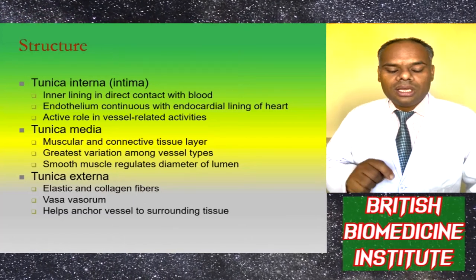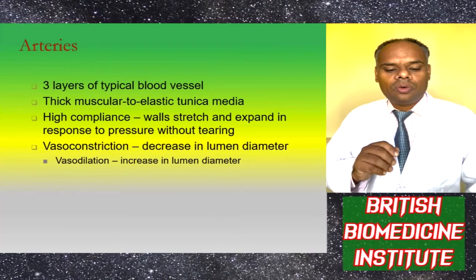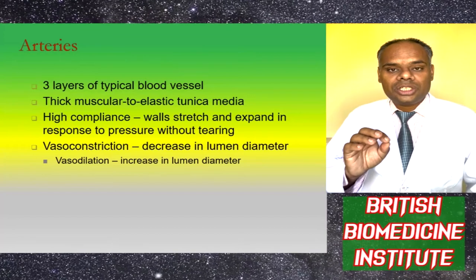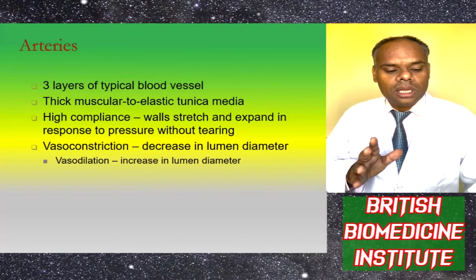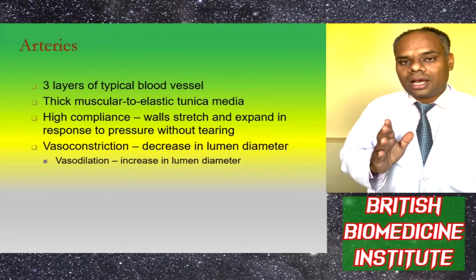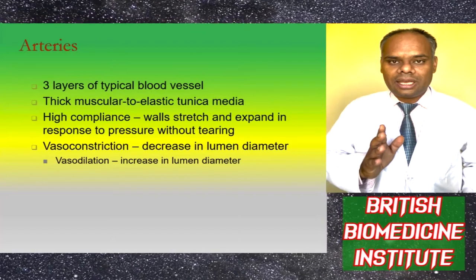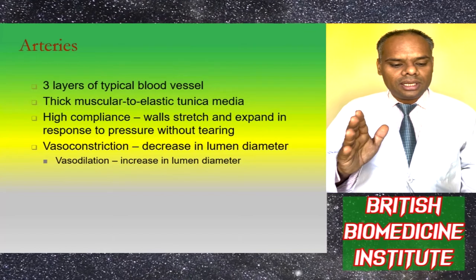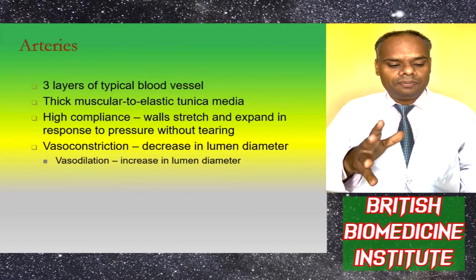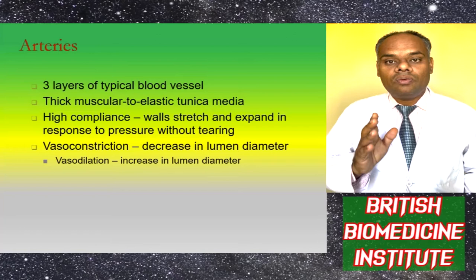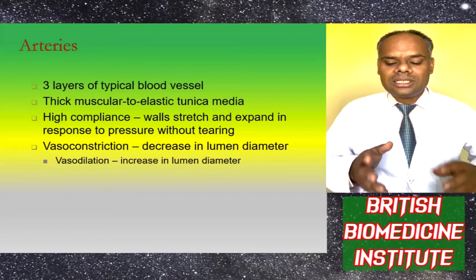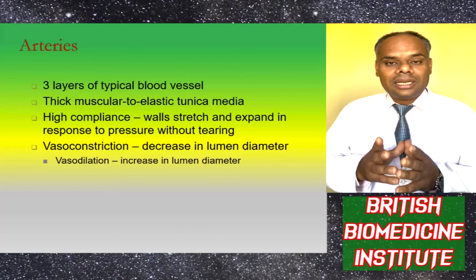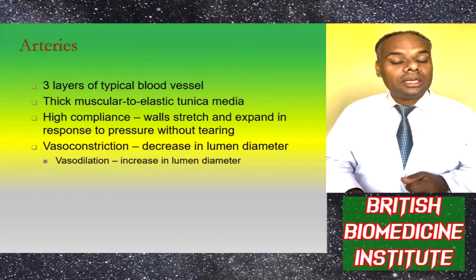Arteries have three layers typical of blood vessels and a thick muscular to elastic tunica media. They are highly compliant — their walls can stretch and expand in response to pressure without tearing. They also exhibit vasoconstriction, which decreases lumen diameter, whereas vasodilation increases lumen diameter.